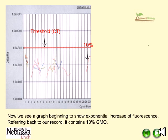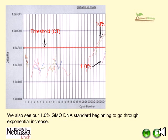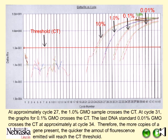We see a graph beginning to show exponential increase in fluorescence. Referring back to our record, it contains 10% GMO. We also see the 1% GMO DNA standard beginning to go through exponential increase. At approximately cycle 27 the 1% GMO sample crosses the CT threshold; at cycle 31 the 0.1% GMO crosses the CT; and the last DNA standard at 0.01% GMO crosses the CT at approximately cycle 34. Therefore, the more copies of a gene present, the quicker the fluorescence emitted will reach the CT threshold.